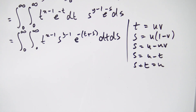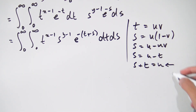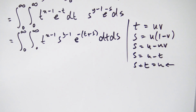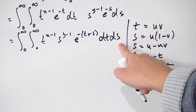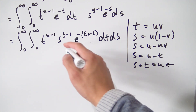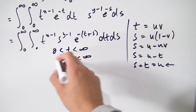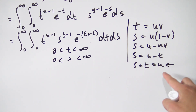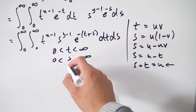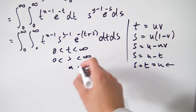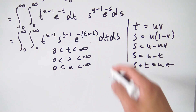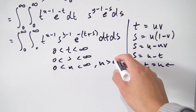Now let's find the new bounds. From t plus s equals u, since t runs from 0 to infinity and s runs from 0 to infinity, adding these domains means u also runs from 0 to infinity. So u is greater than 0.